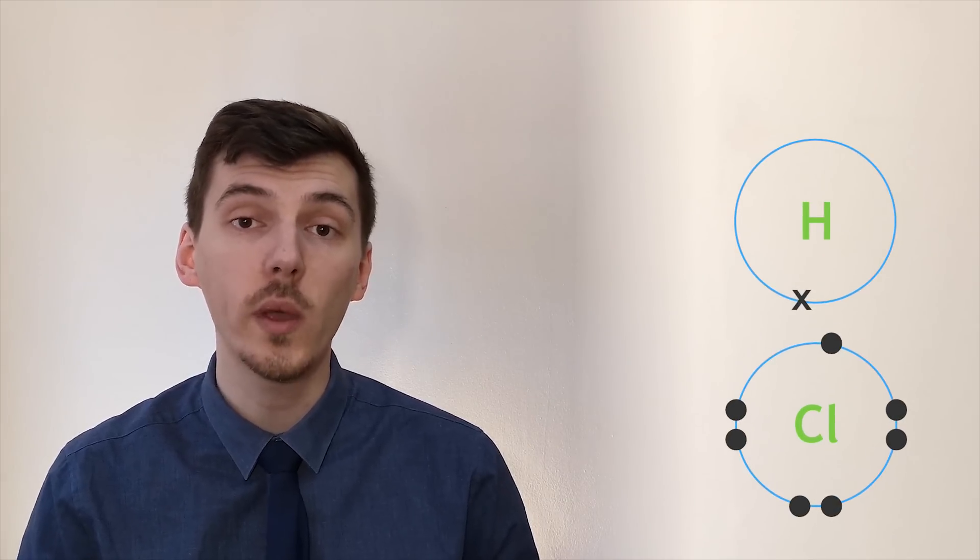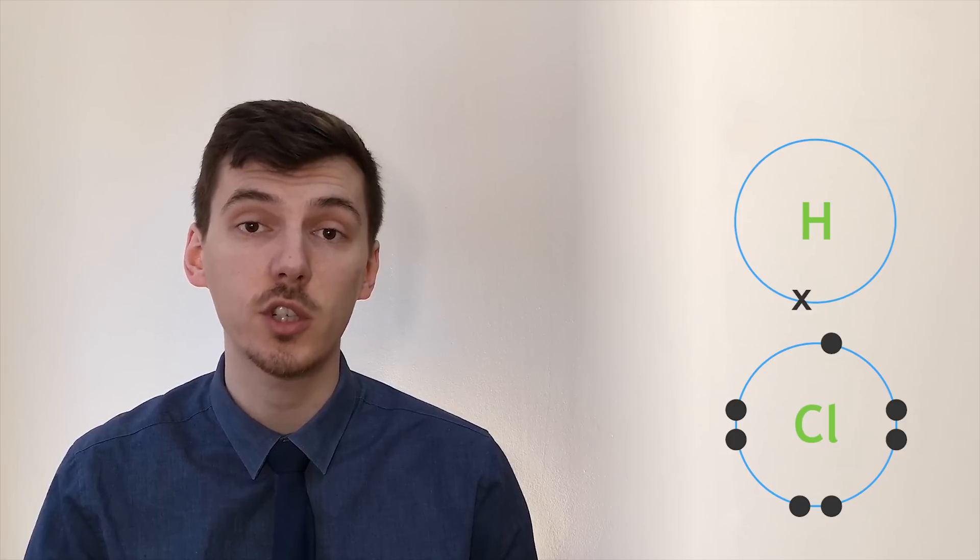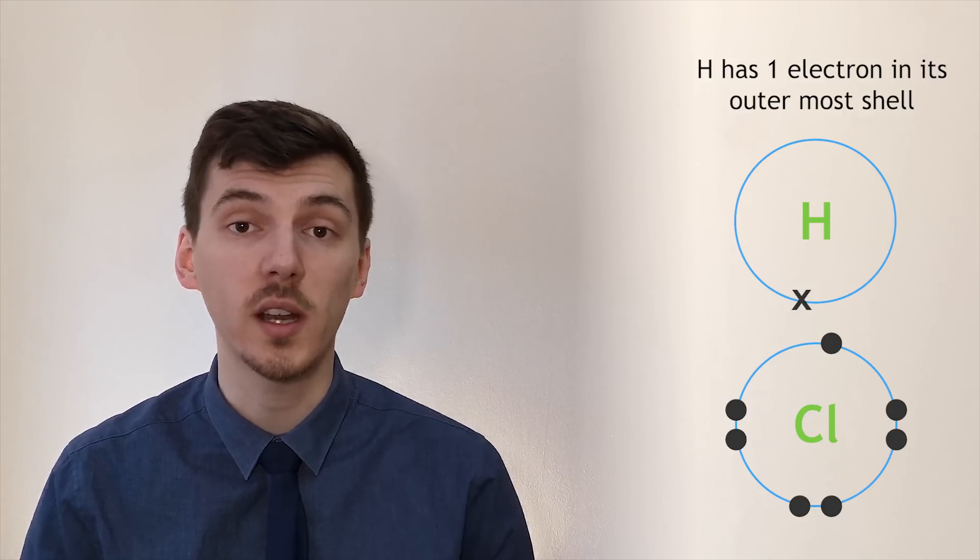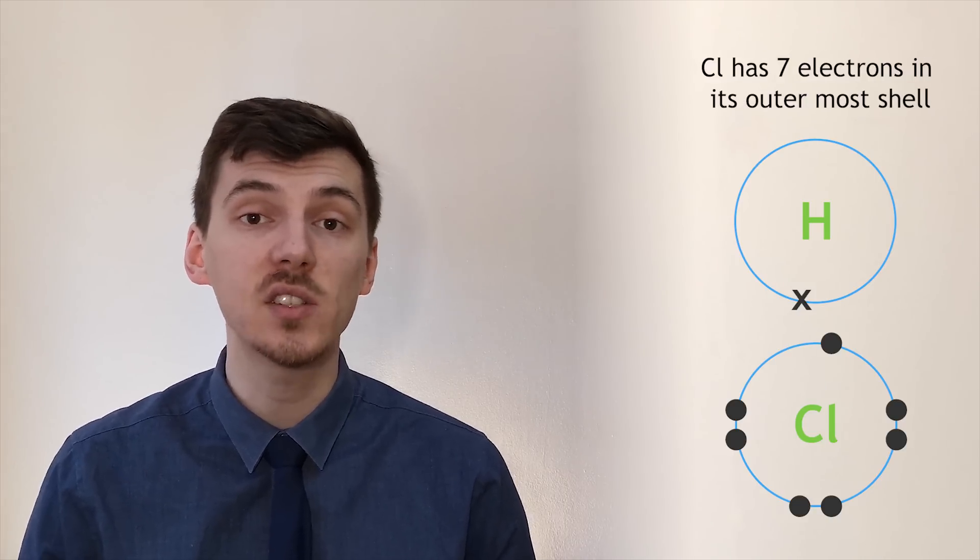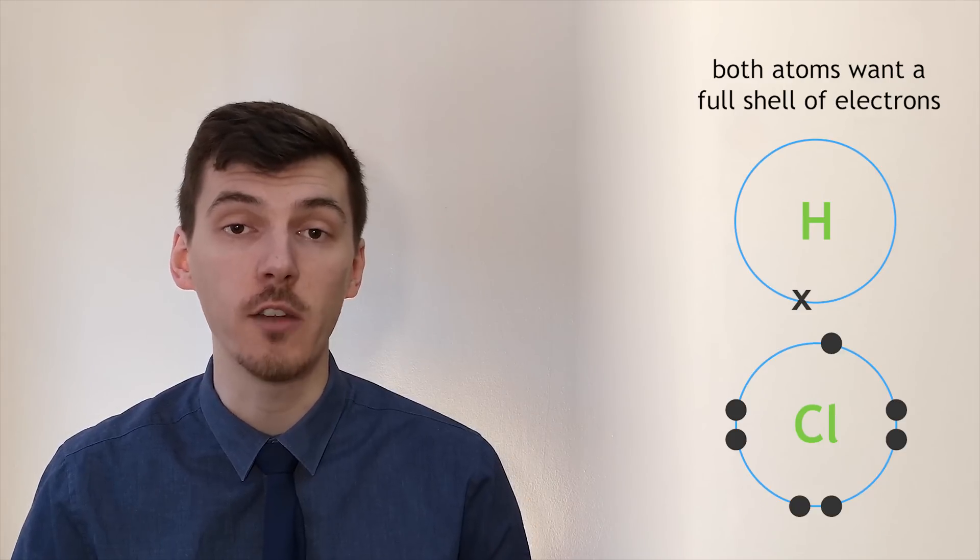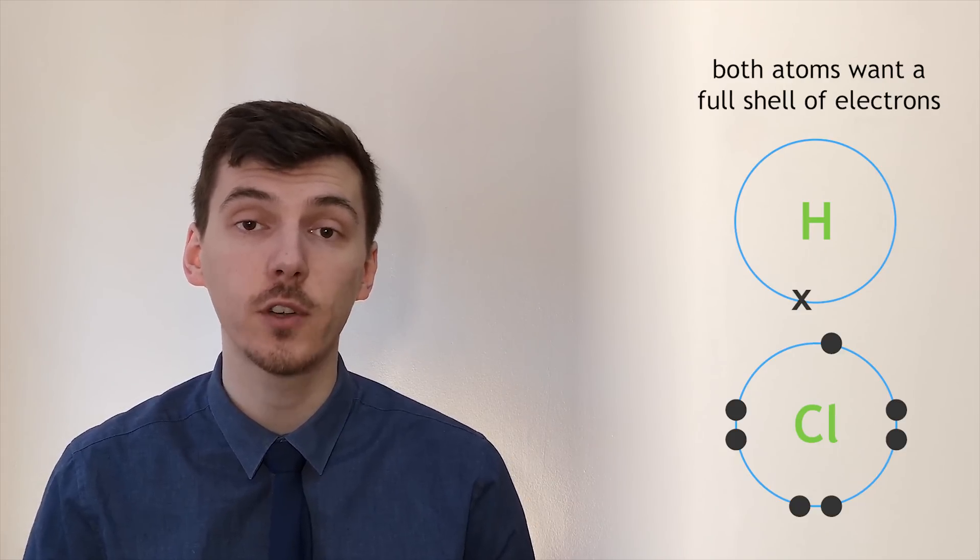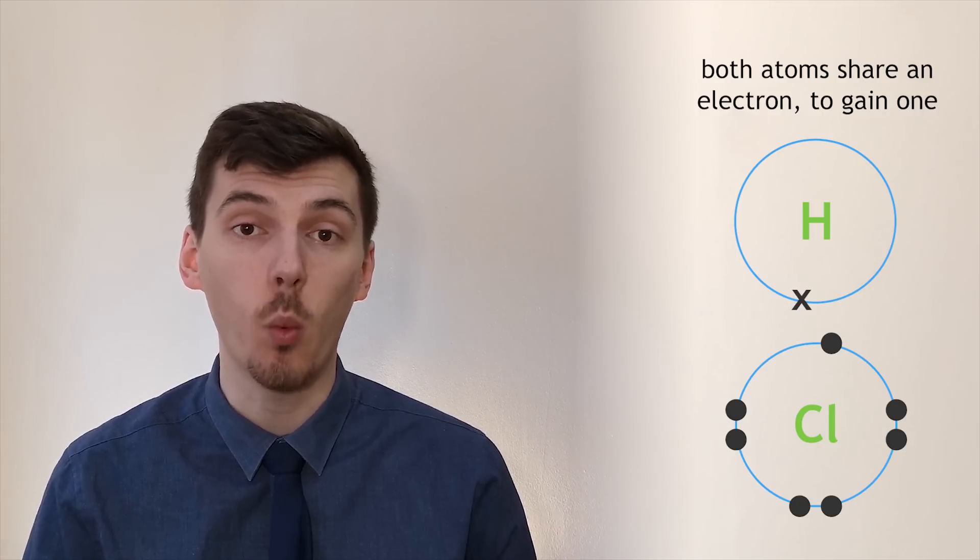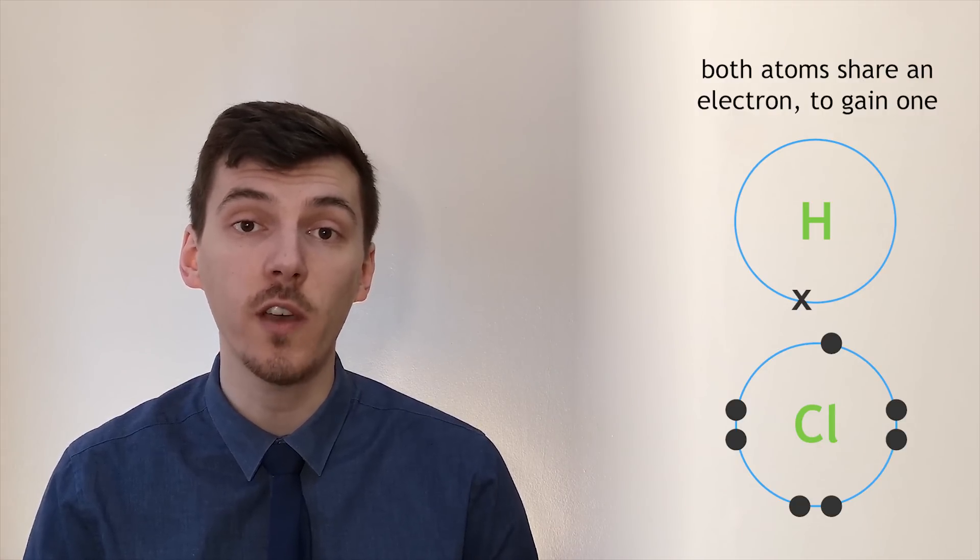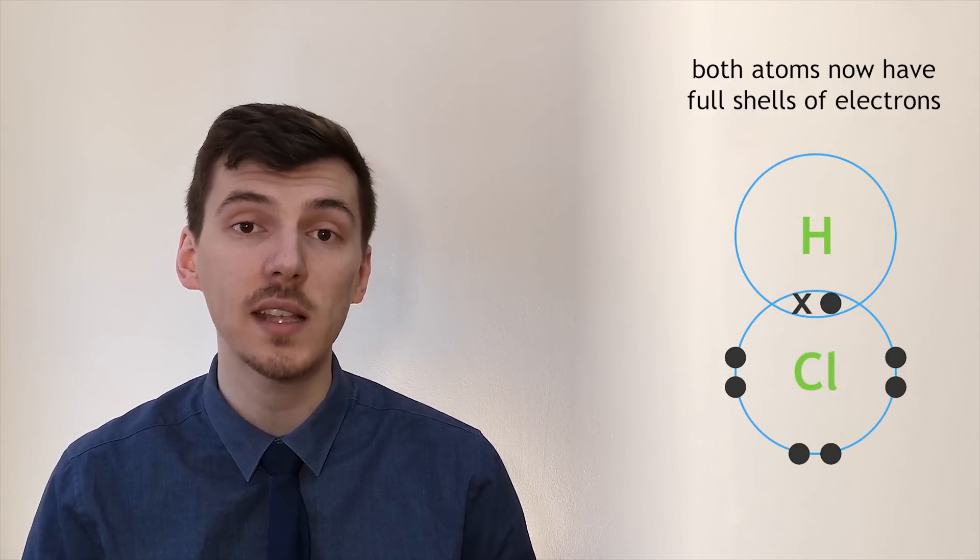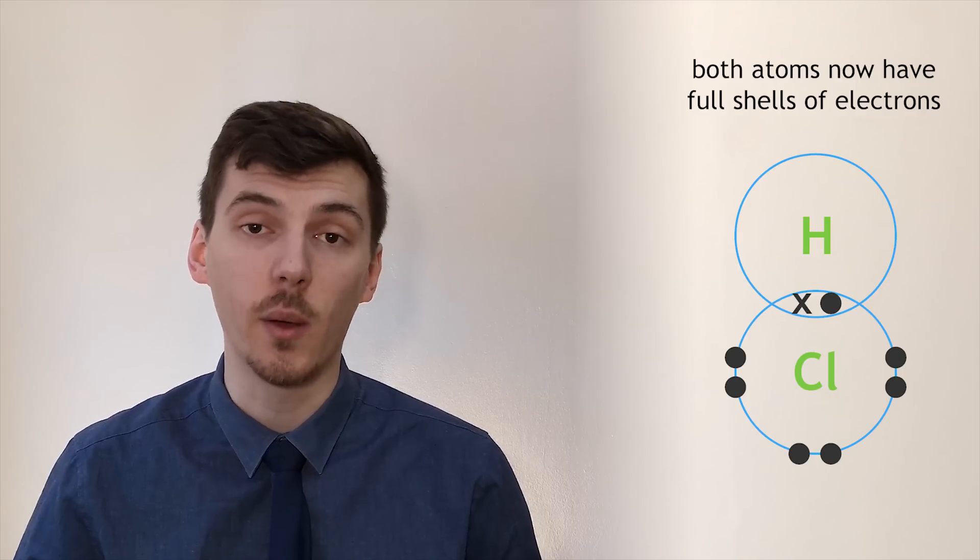A similar example between hydrogen and chlorine: we can draw a dot and cross diagram to show how these two will form a covalent bond. Hydrogen has one electron in its outer shell and chlorine has seven. Both of them want a full outer shell of electrons. For hydrogen that means two electrons and for chlorine that means eight. Both of our atoms can share one electron each into a covalent bond and what we end up with is hydrogen having two electrons to orbit around its atom and chlorine now has eight.